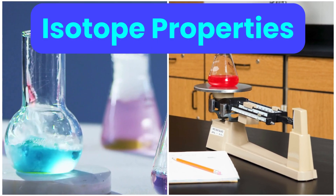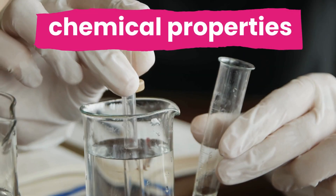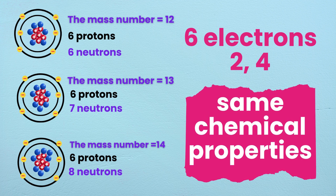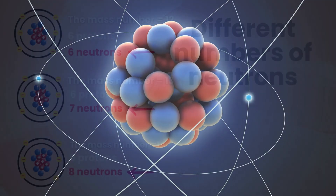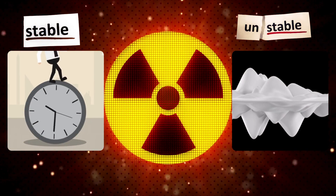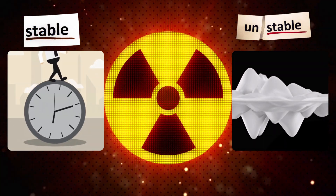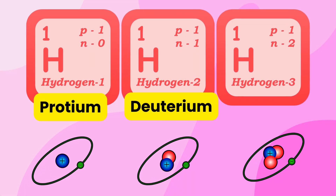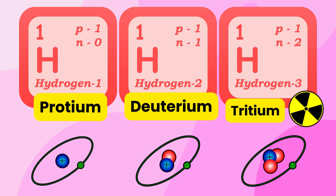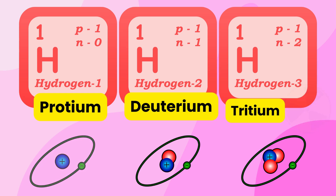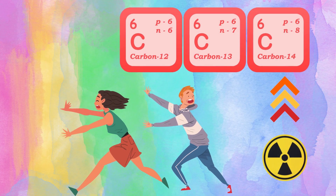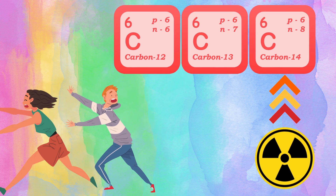Isotope properties. Isotopes of the same element have similar chemical properties because they have the same electron configuration. However, their physical properties differ because they have different numbers of neutrons. Some isotopes are stable and some are unstable. For example, the hydrogen isotopes protium and deuterium are stable whereas tritium is unstable and radioactive. In the case of carbon, carbon-12 and carbon-13 are stable while carbon-14 is unstable and radioactive.